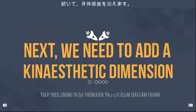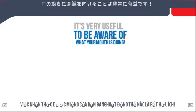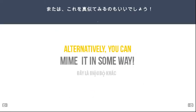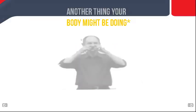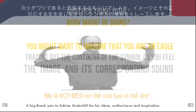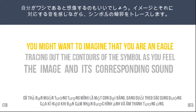Next up, we add a kinesthetic dimension. It's very useful to be aware of what your mouth is doing. This is what your mouth absolutely needs to be doing. Alternatively, you can mime it in some way. You might want to imagine that you are an eagle tracing out the contours of the symbol as you feel the image and its corresponding sound.